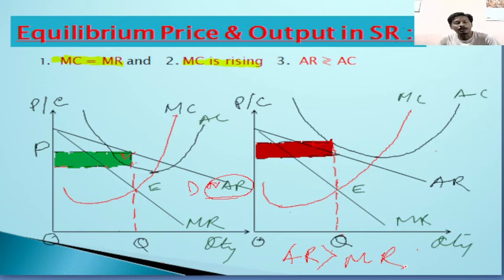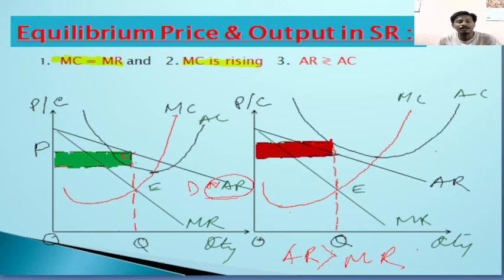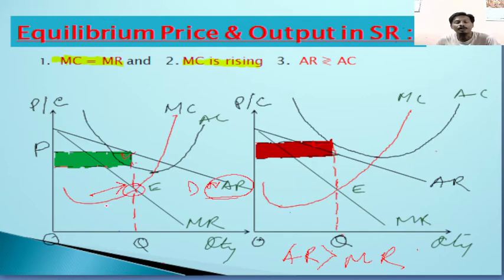To determine the equilibrium level of price and output, we compare marginal cost with marginal revenue. We draw the MC curve such that at its rising condition it becomes equal to MR — that is, the MC curve cuts the MR curve at a point where MC equals MR at its rising condition. This intersection point E is called the equilibrium point.